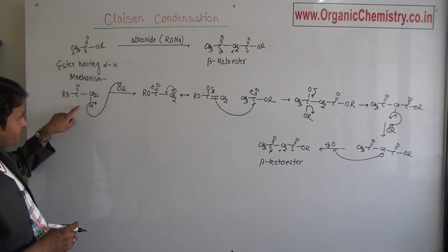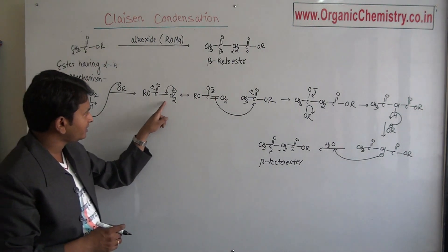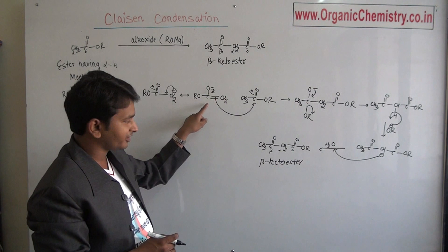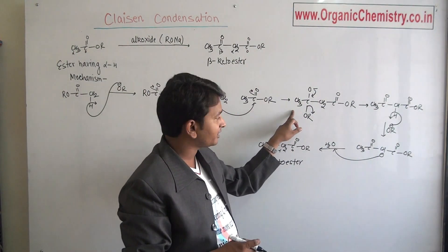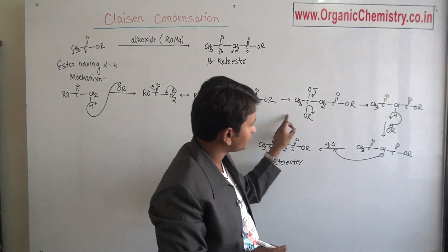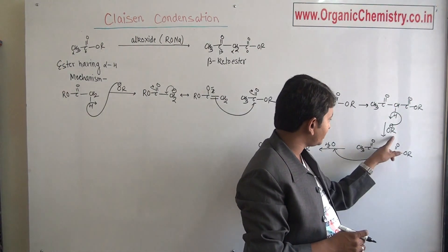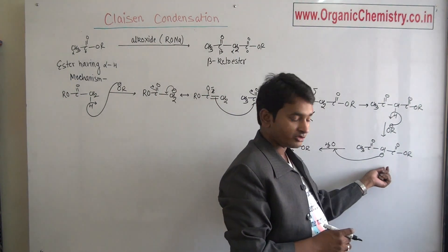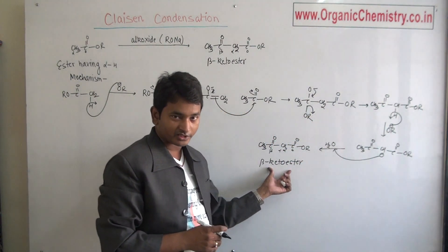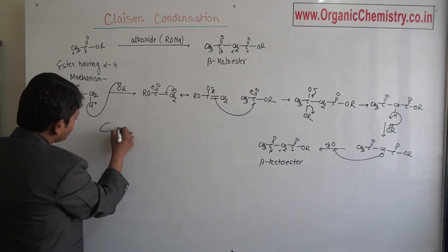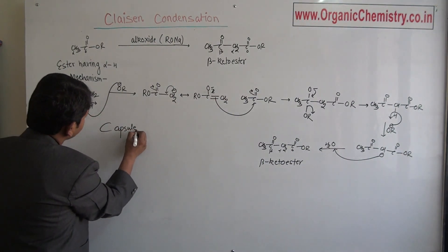These first abstract protons form carbanion which is resonance stabilized to give enolate. This enolate attack over ester part to give this type of intermediate which loses OR to give beta-keto ester. This alkoxide abstract proton to form salt which abstract proton from water to form final product beta-keto ester.